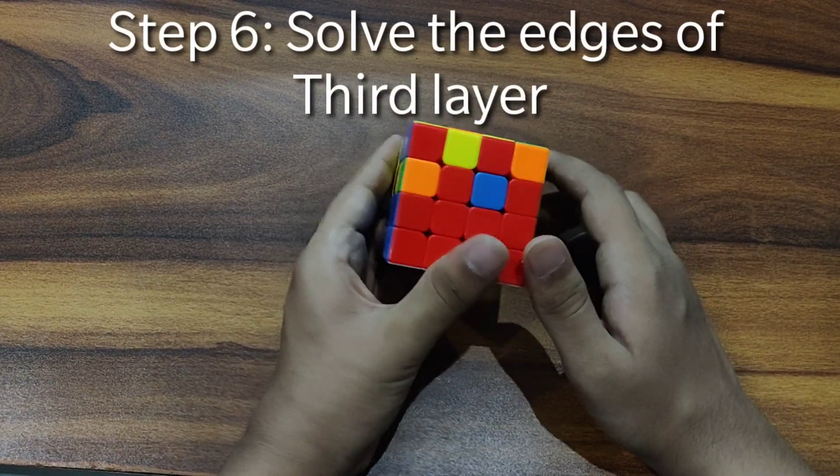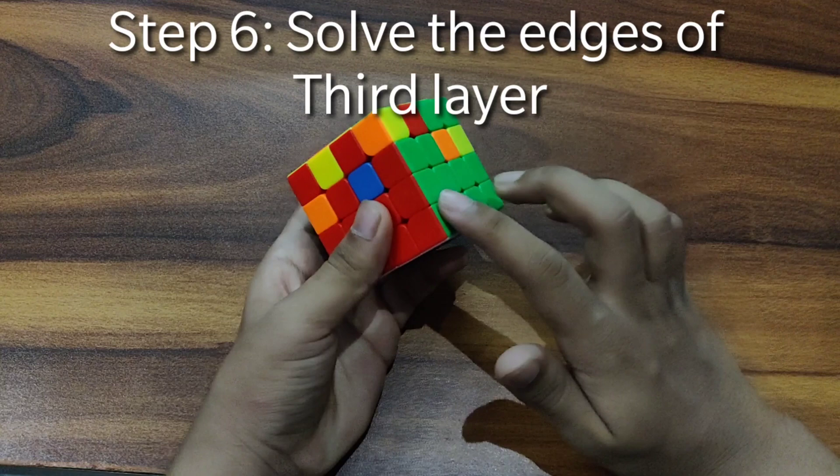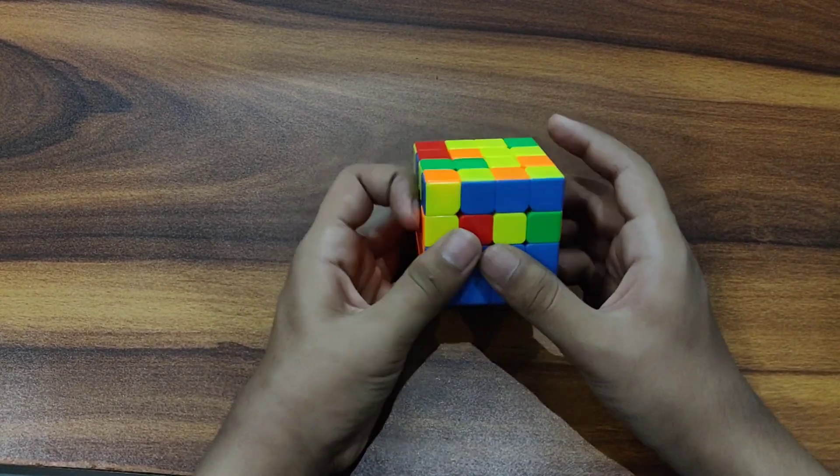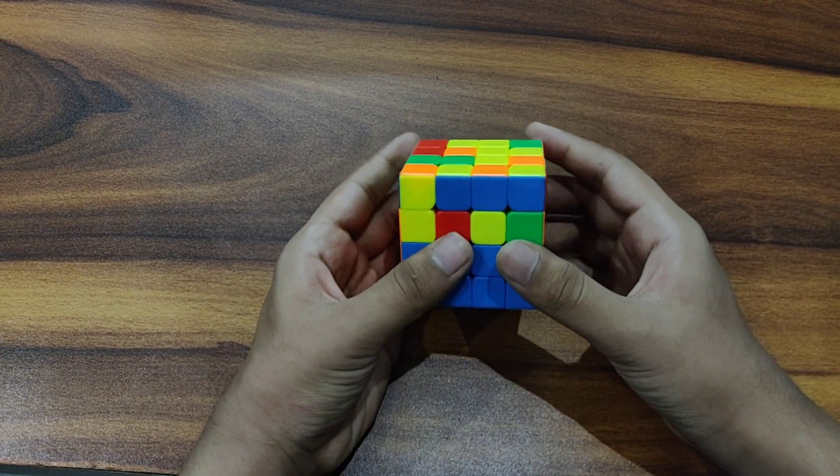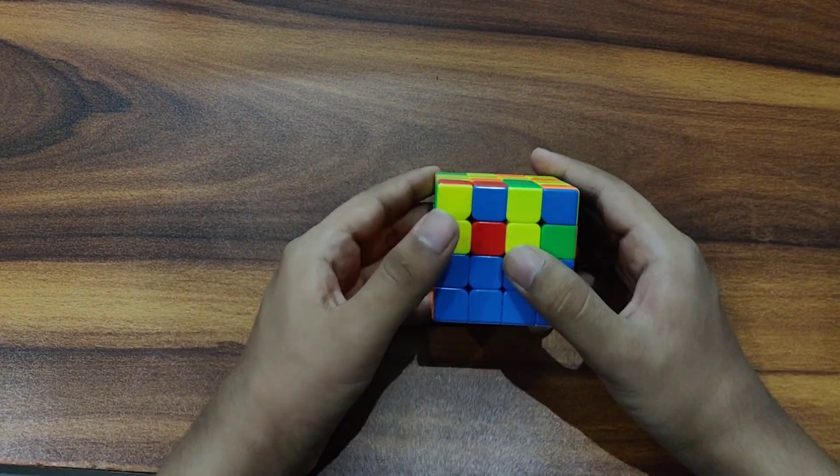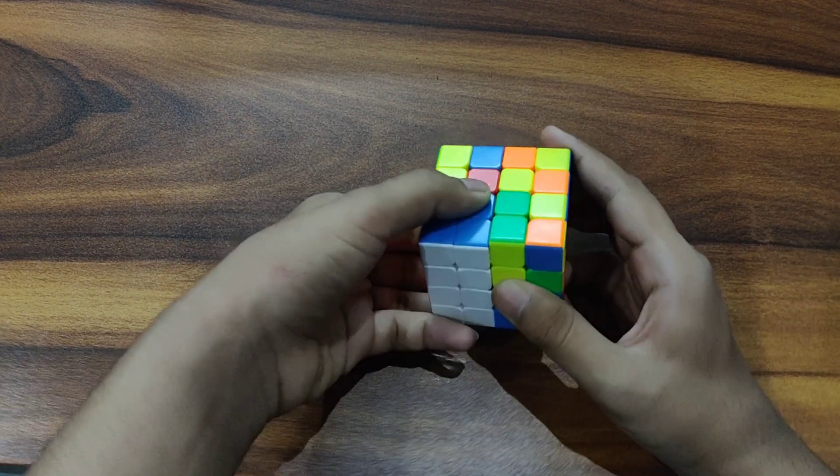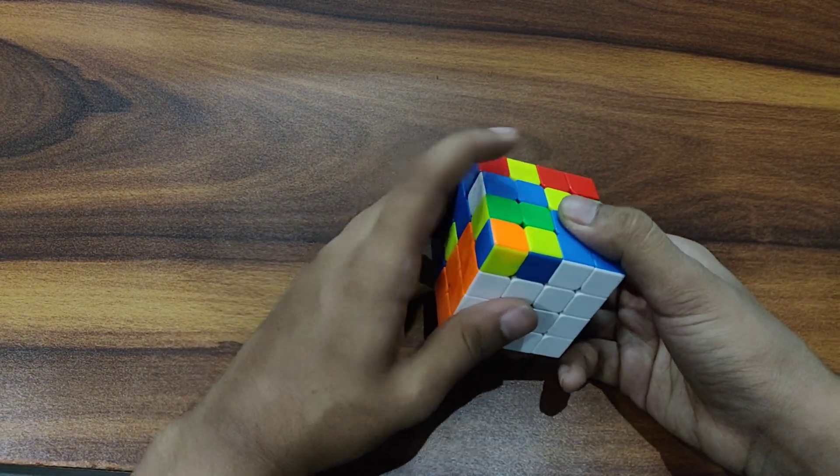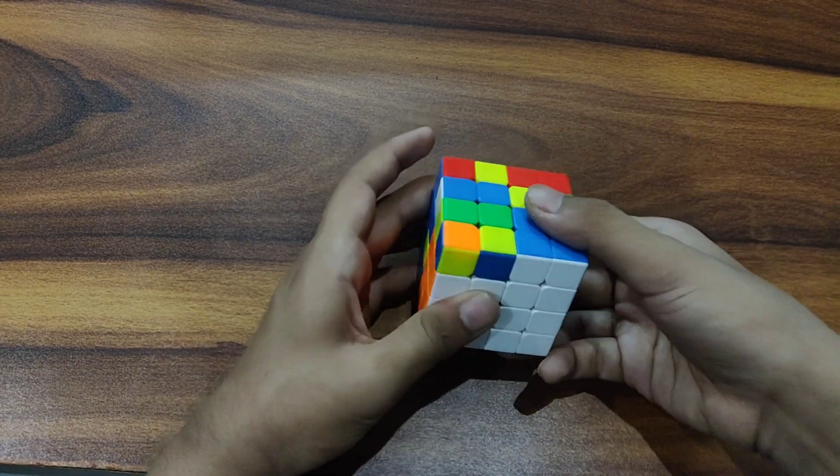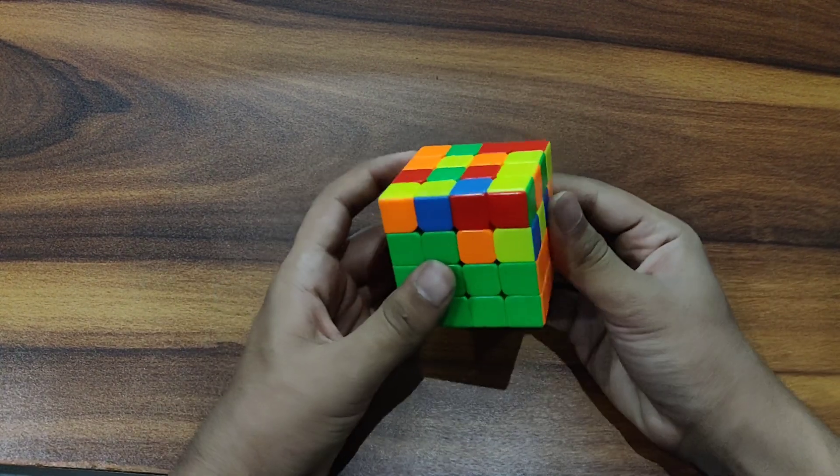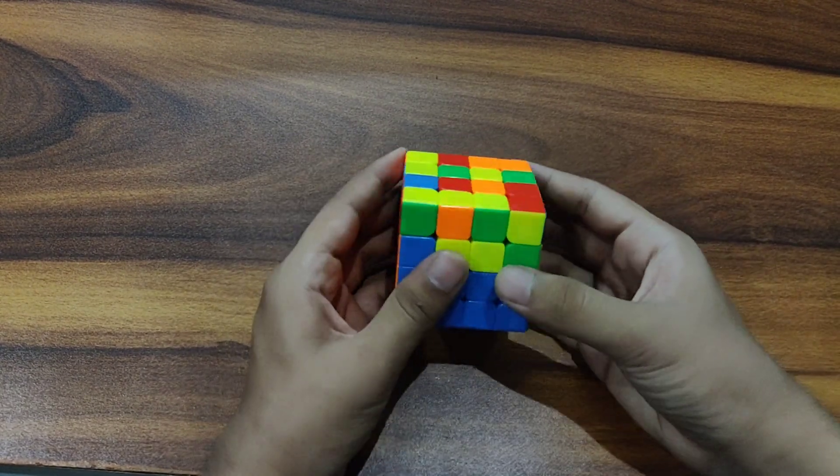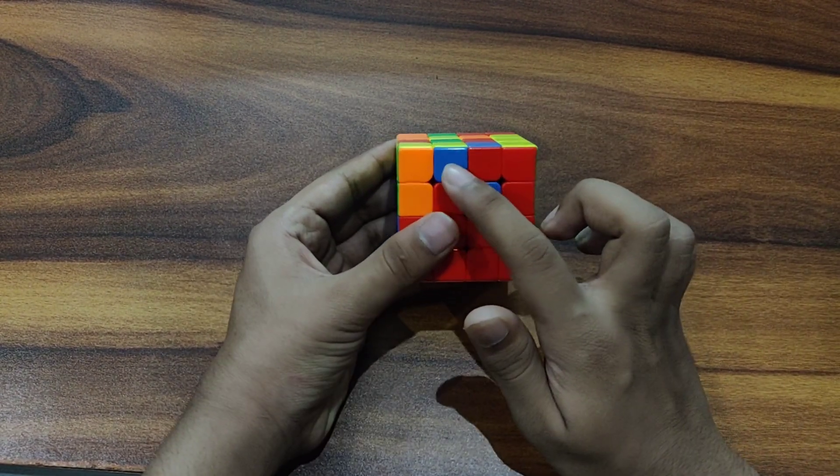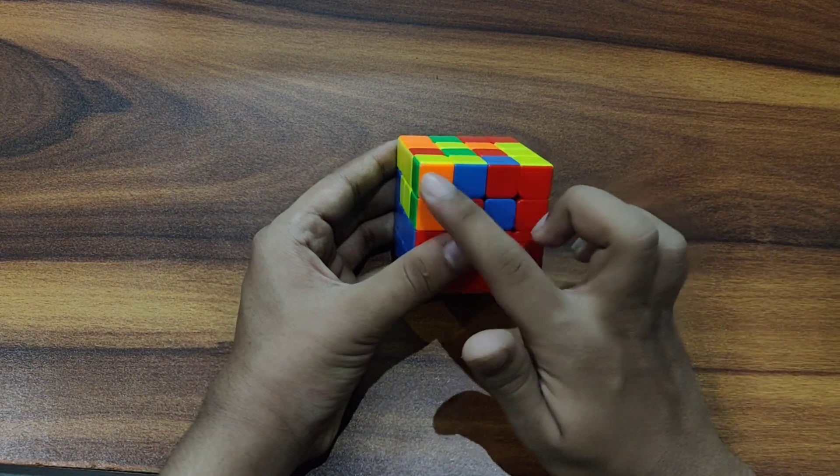So now to the third layer we have to solve all these four edges. The one gets solved. So for this, the algorithm is also same. Like if you want to insert it to here, you will just move it away. And now you will do the same stuff but with a wide layer. So L prime U. So now you will move it away and then you have, now you will insert this back like this. And now you will insert it back like a pair. So this way you can solve the whole, like the four edges.